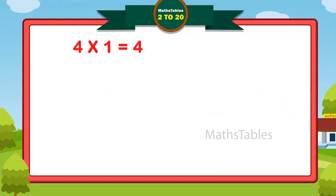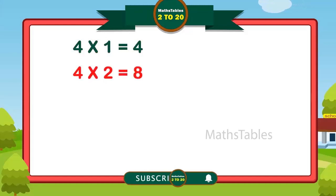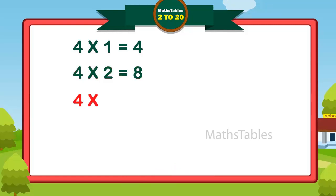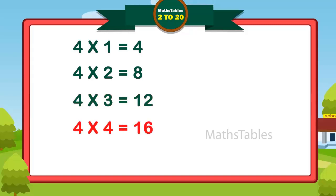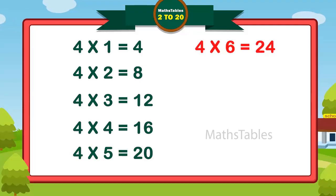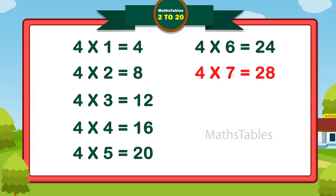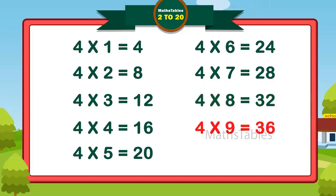4 ones are 4. 4 twos are 8. 4 threes are 12. 4 fours are 16. 4 fives are 20. 4 sixes are 24. 4 sevens are 28. 4 eights are 32. 4 nines are 36. 4 tens are 40.